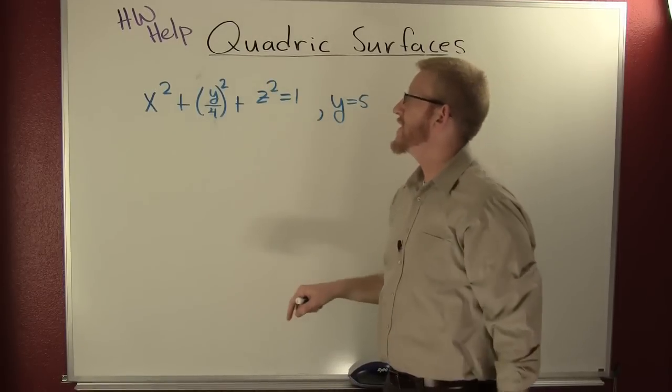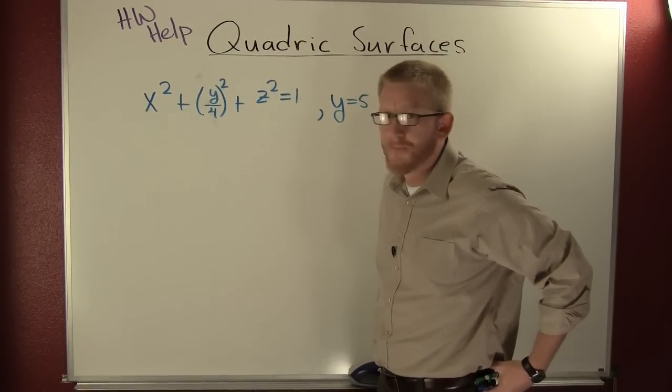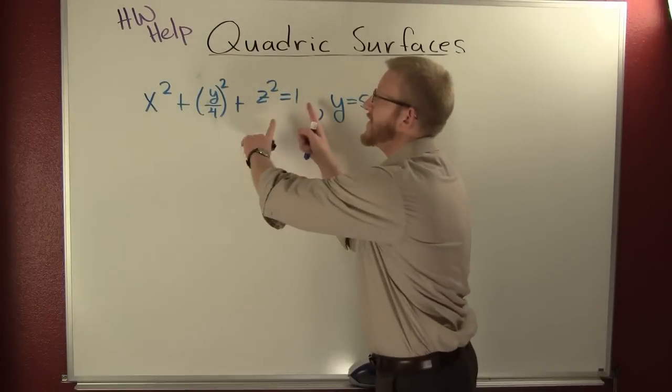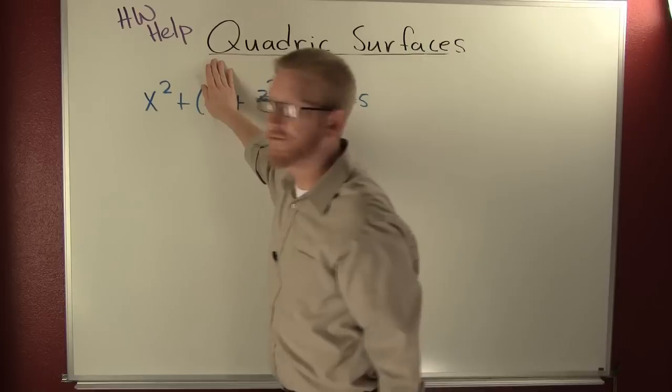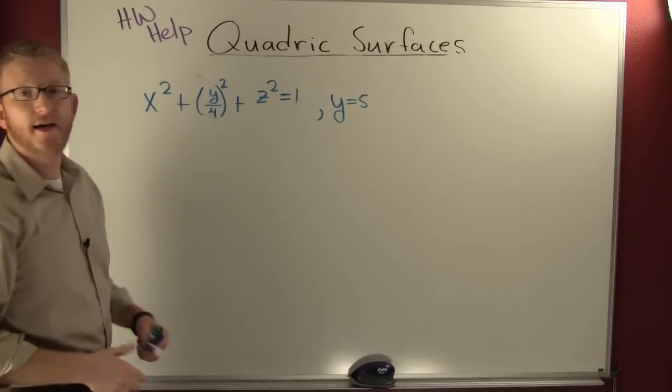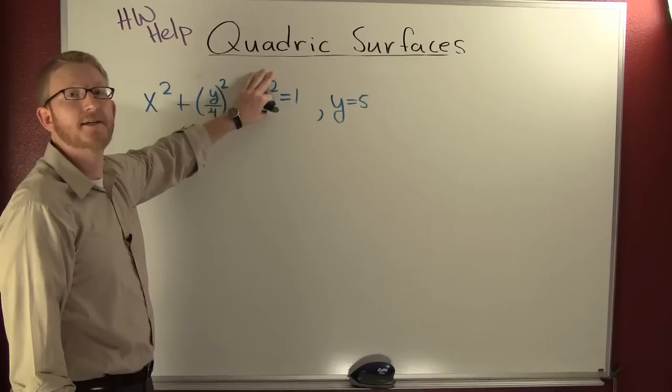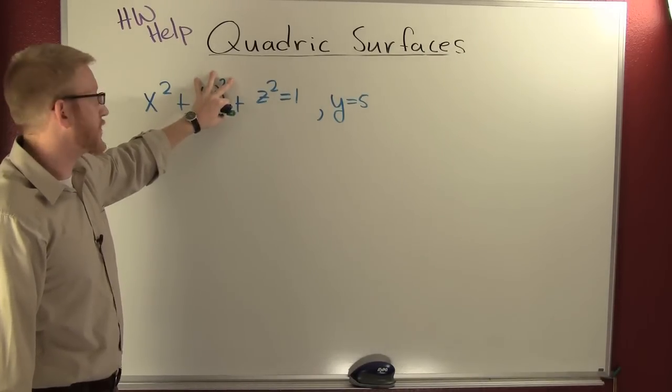Let's identify that surface. What kind of surface is that? It's an ellipsoid. Yeah, that's right. Everything is positive. And if you look at the traces in the different planes, in the y-z plane it's an ellipse, in the x-y plane it's an ellipse, and in the x-z plane it's a circle.